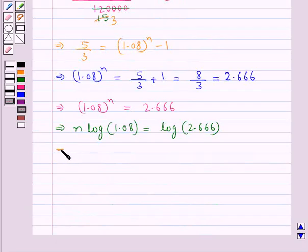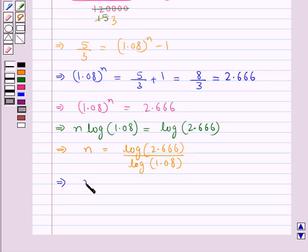And thus we have N is equal to log of 2.666 upon log of 1.08. Now log of 2.666 is 0.4259 upon log of 1.08 is 0.0334.